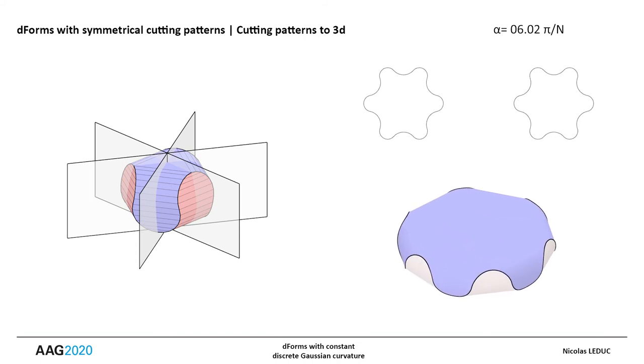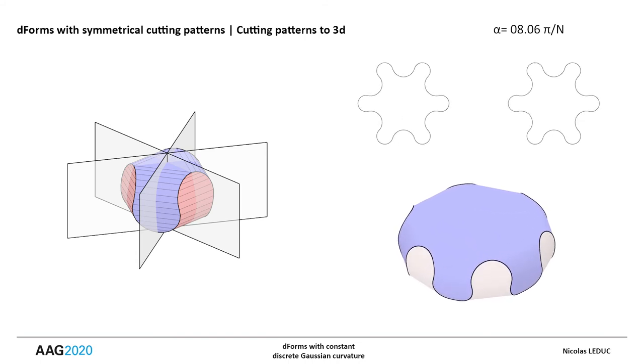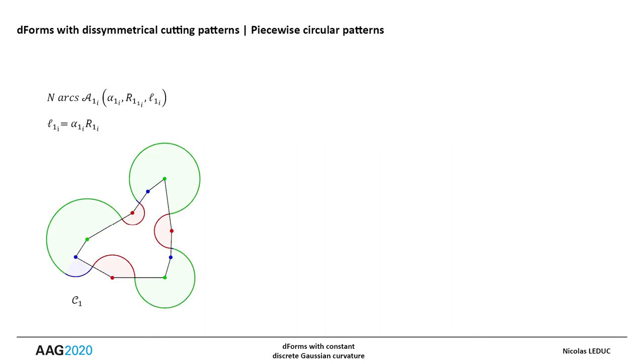We now investigate D-forms, still with constant Gaussian curvature, but this time with disymmetric cutting patterns. As before, we keep working with piecewise circular curves.